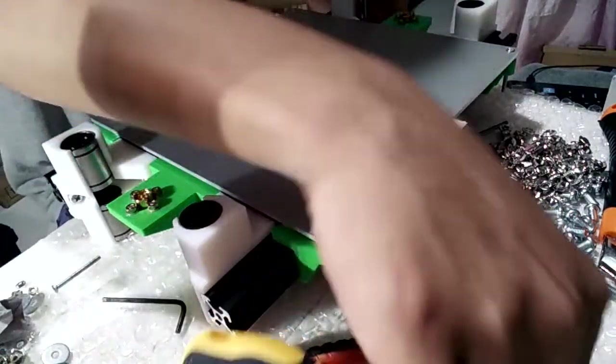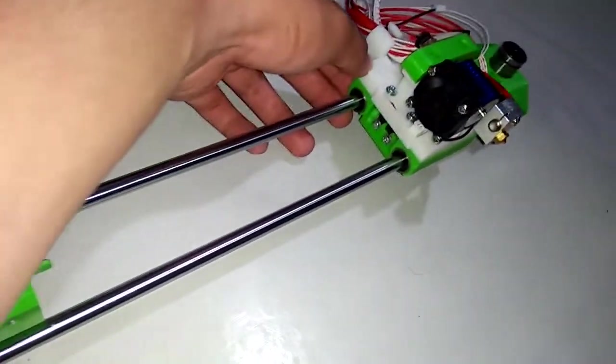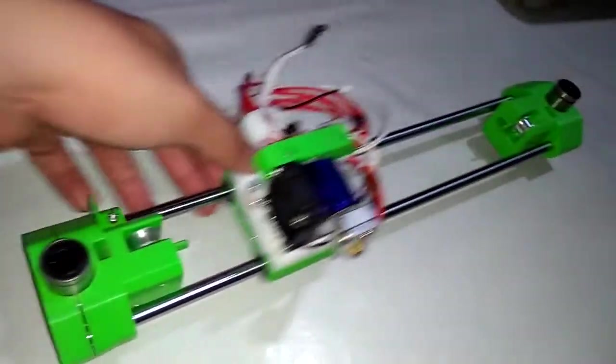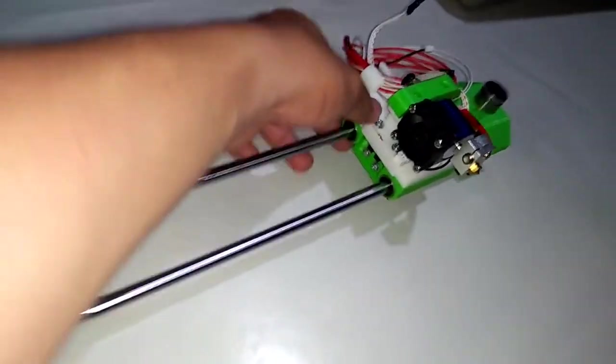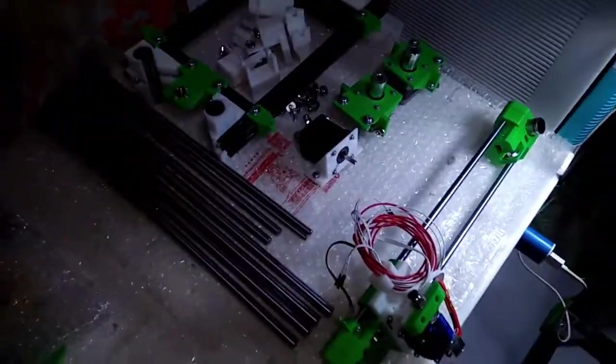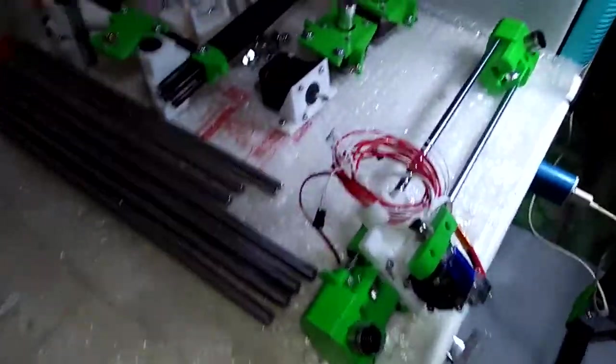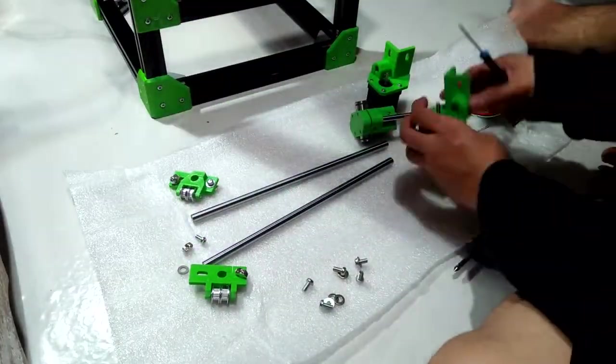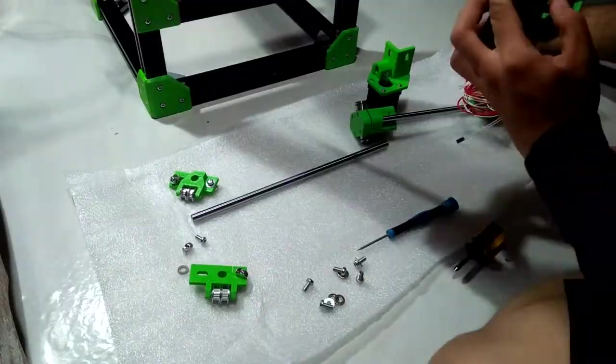And then, I assembled the x-axis of the machine and tested the smoothness of the Linear Motion System. And when all mechanical parts and Linear Motion Systems are prepared, I started mounting and installing each of them on the frame of the machine.